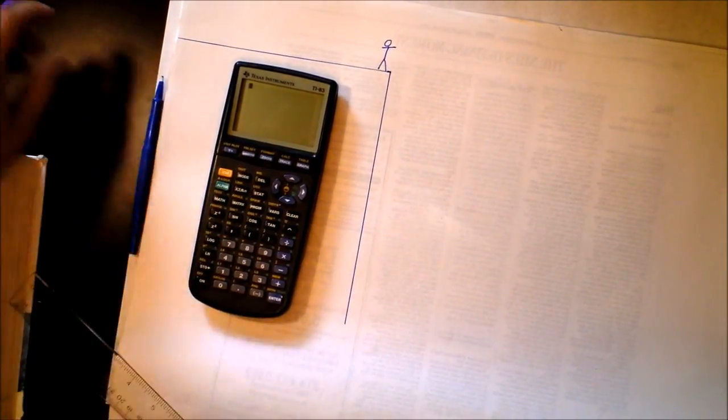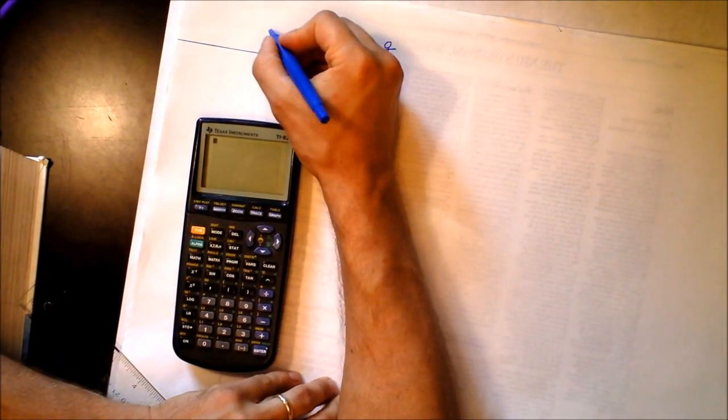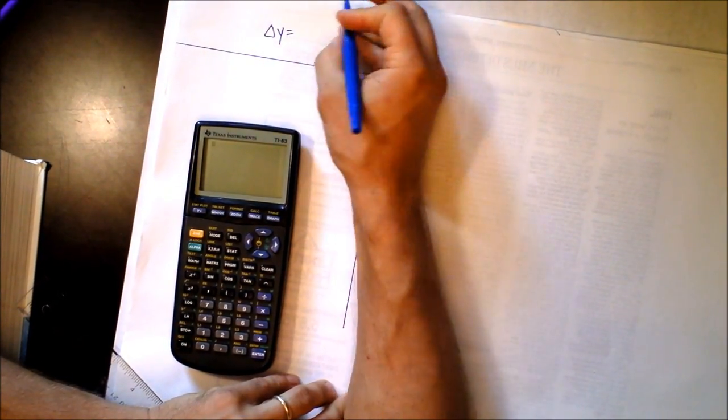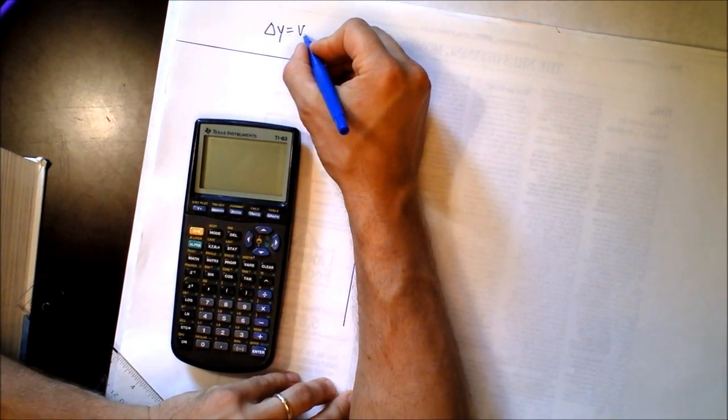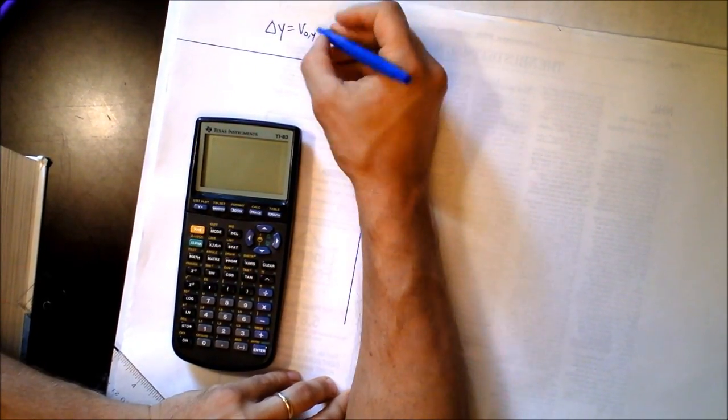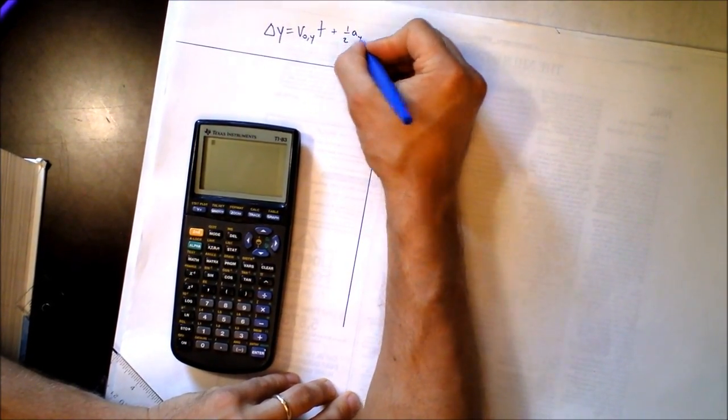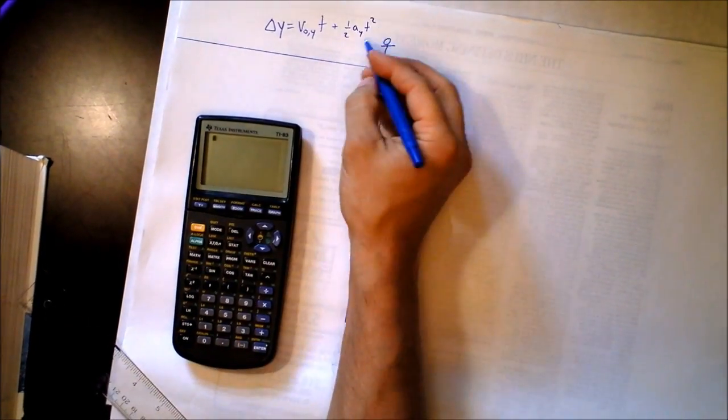So what I'd like to do is figure out how far the monkey head has gone. And we know that delta y from the previous video is the initial velocity in the y direction times time plus one half the acceleration in the y direction times time squared. So I'm going to use this equation.